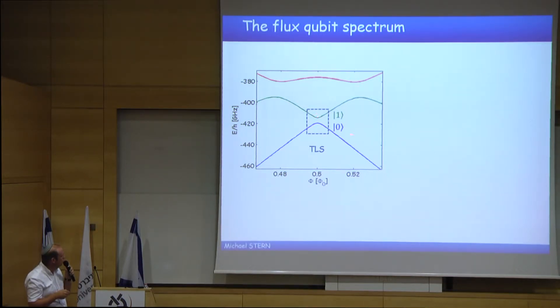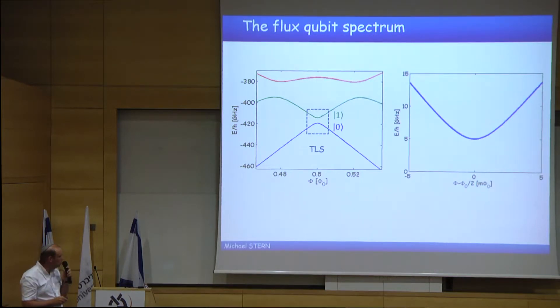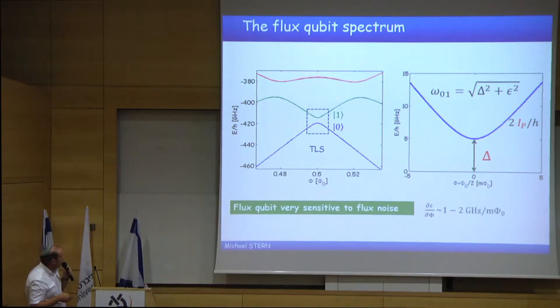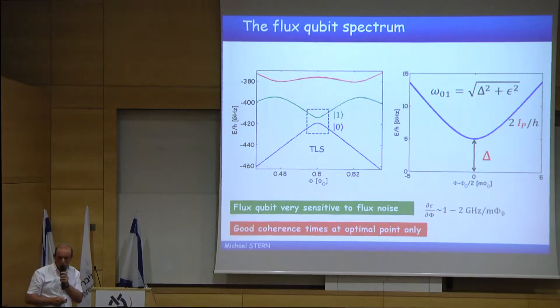And if we solve the Hamiltonian, we find that close to phi_0 over 2, close to half a flux quantum, the flux qubit is a very nice two-level system. And if we take the energy of the first level minus the energy of the ground state, we get the spectrum of the flux qubit, which is fully determined by two parameters. On one hand, the gap of the flux qubit, which is a tunneling element between the two degenerate states, and the persistent current, which is flowing in the flux qubit. There is already one problem. As you can see from here, the dependence of the flux qubit as a function of flux is huge, of the order of one to two gigahertz per milliphi_0, which means that any flux noise will give rise to decoherence. In fact, there is only one point where we can work safely without feeling the problem of decoherence, at least at first order. It is exactly at this point where the flux qubit is immune to flux noise.